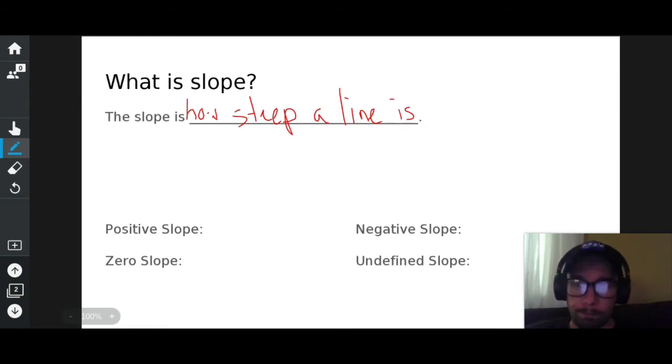So the way we calculate that is a little fraction called rise over run.